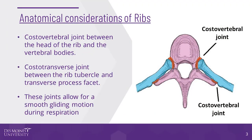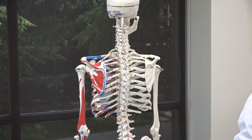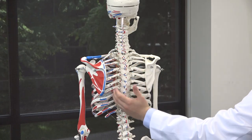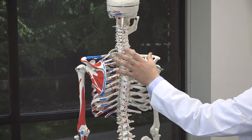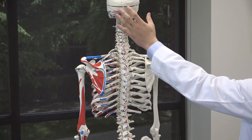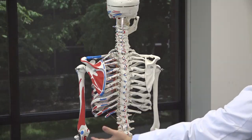Each rib has a costovertebral joint between the head of the rib and the vertebral bodies. In addition, each rib also has a costotransverse joint between the rib tubercle and the transverse process facet. These joints allow for smooth gliding motion during respiration. The ribs are also sites of extensive myofascial attachment for breathing, head and neck control, and upper limb and trunk motion. Articular and/or myofascial restrictions of the ribs can directly impede respiratory motion and indirectly cause postural implications for regions adjacent to the thorax.